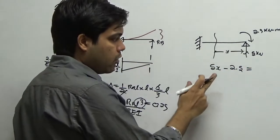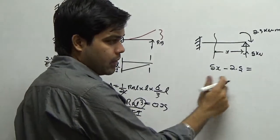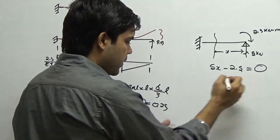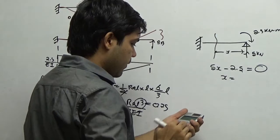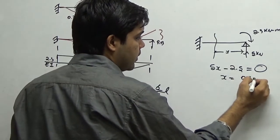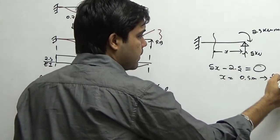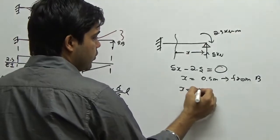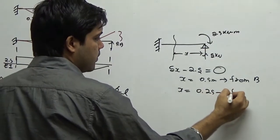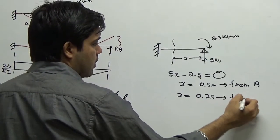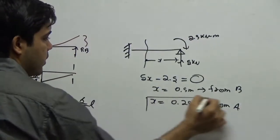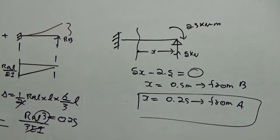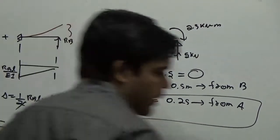I need the point of contraflexure, which is the point where the bending moment is zero. Equating to zero: 5x minus 2.5 equals zero, giving x equals 2.5 by 5, that is 0.5 meter. This is from B, so x is equal to 0.25 meter from A. That is your answer.